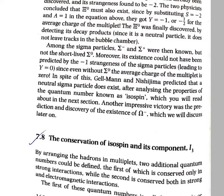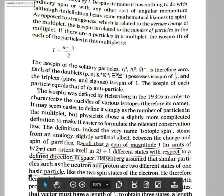Isospin is used to specify multiplets of hadrons. We know that hadrons appear in multiplets. In order to find out the number of members in a multiplet and also the charges of each member, we need the isospin quantum number. There is no relationship between isospin and normal spin, even though there is similarity in name. It does not deal with the conservation of angular momentum.